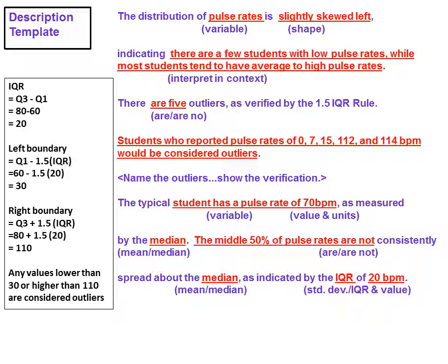Now we're choosing the median here because the distribution is skewed left. In the description, do not talk about why you're choosing the median. Just choose it. Your choice will communicate that you understand why.